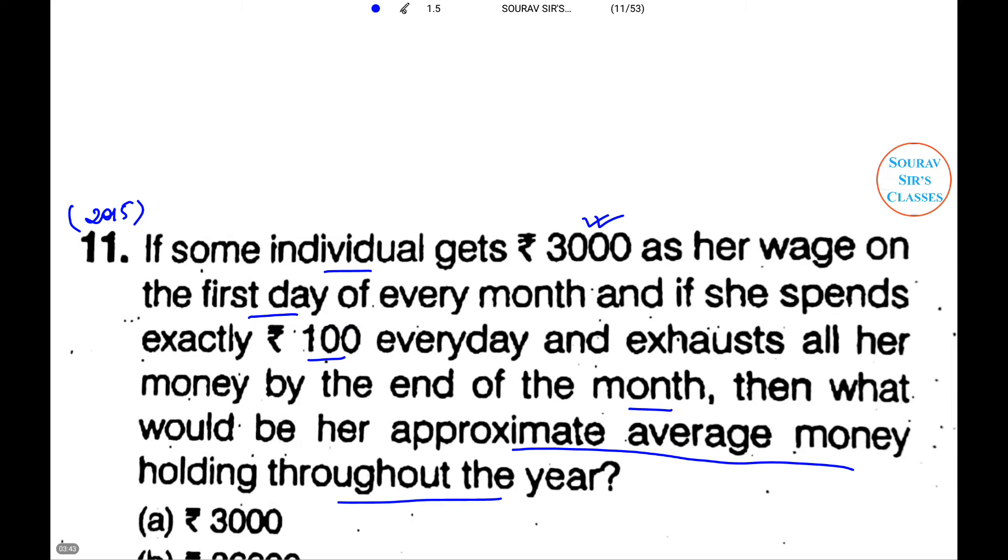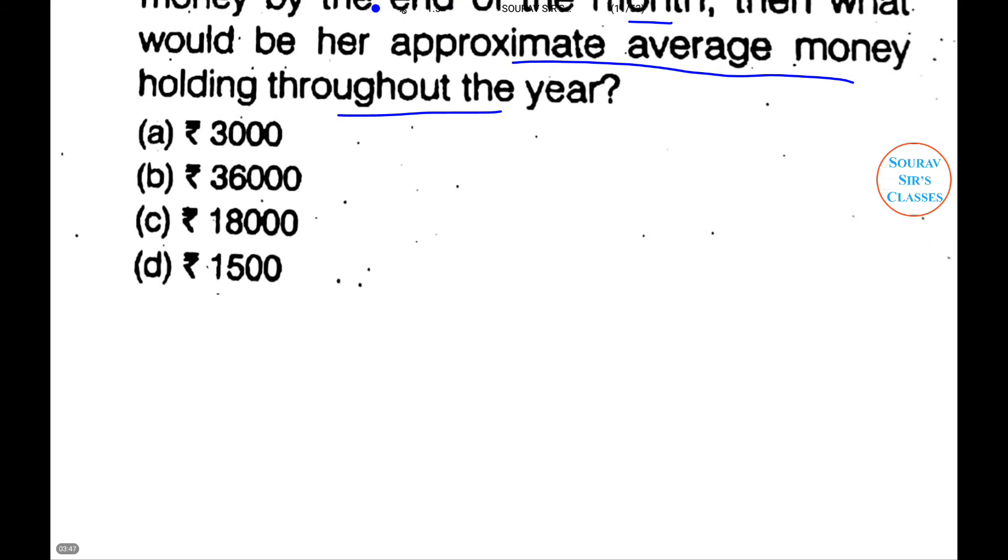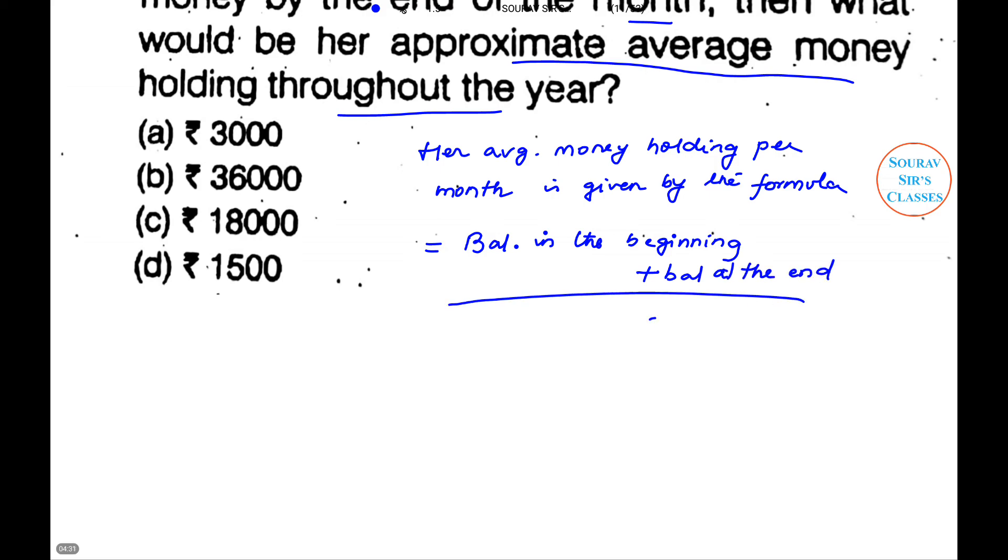Now her average money holding per month is given by the formula: (Balance in the beginning + Balance at the end) / 2. So it was ₹3000 at the beginning, balance at the end of the month was zero, divided by 2, so it will be ₹1500. So D will be the correct answer to this particular question.